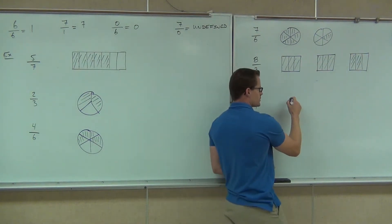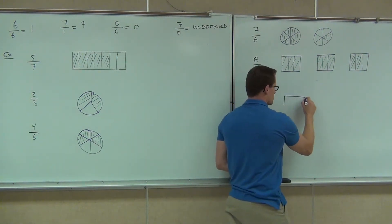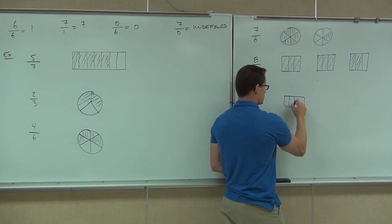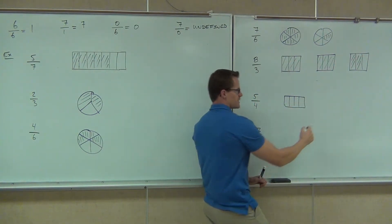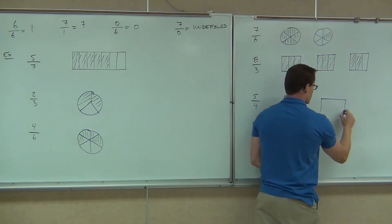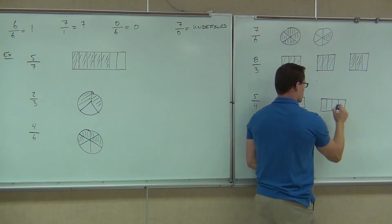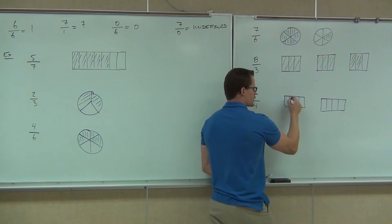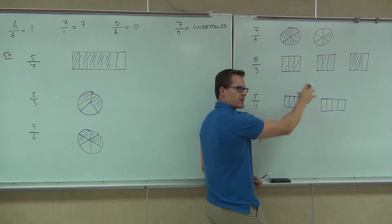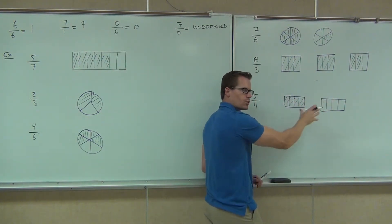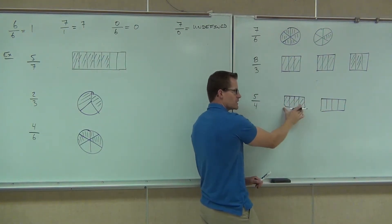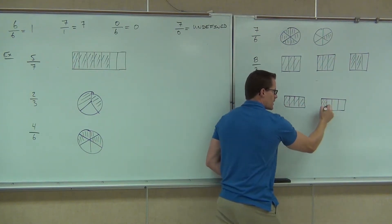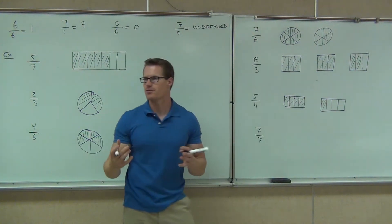How about the five-fourths? How many pieces did we cut that into? Four pieces there. Two holes, though — four pieces. We're going to shade five out of those pieces. We shade all four of these. We had to have one more hole to cover this last piece that we weren't able to get to with this four. So we have four out of four here, and we have one out of four there. That's giving us our five out of four.